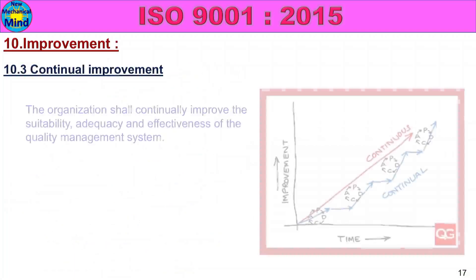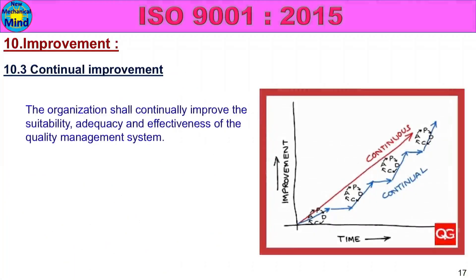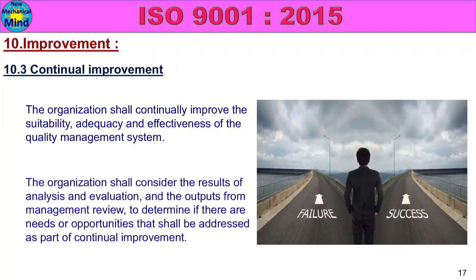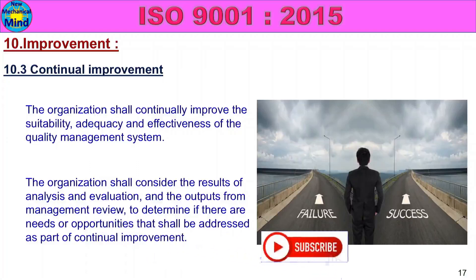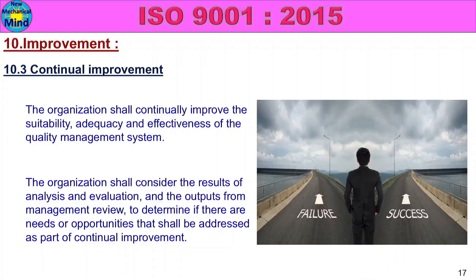10.3 Continual Improvement. The organization shall continually improve the suitability, adequacy and effectiveness of the quality management system. One company has a quality management system — they can improve the situation and the effectiveness. The results of the analysis and evaluation, and the outputs from management review, to determine if there are needs or opportunities that shall be addressed as part of continual improvement.